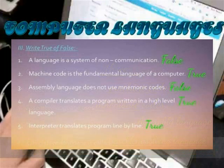True or False: A language is a system of human communication — False. Machine code is the fundamental language of a computer — True.